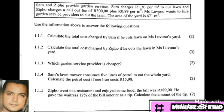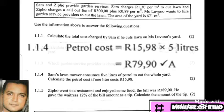Question 1.1.4: Sam's lawnmower consumes 5 liters of petrol to cut the whole yard. Calculate the petrol cost if 1 liter costs R15.98. Since we know the price of 1 liter, 5 liters means we multiply by 5, and our final answer would be R79.90.